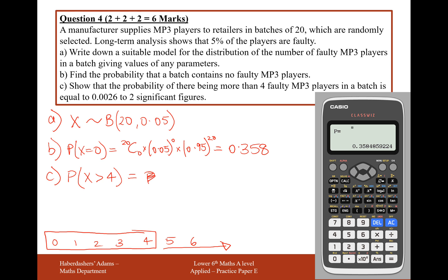What we don't want is the probability of 4 or fewer faulty MP3 players, and if that's the probability we don't want, then we'll do 1 minus it to get our final answer.